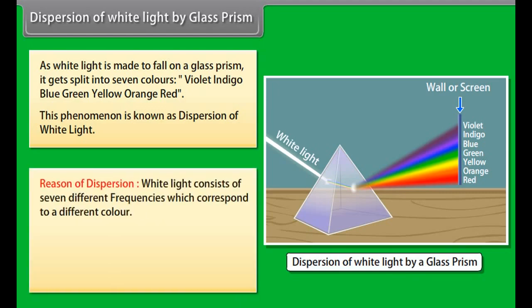White light consists of seven different frequencies which correspond to a different color. Angle of deviation for each color is different because of which each color bends at a different angle and we see a band of colors known as VIBGYOR.